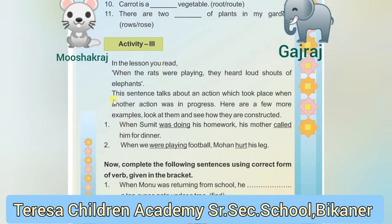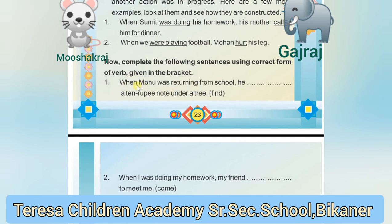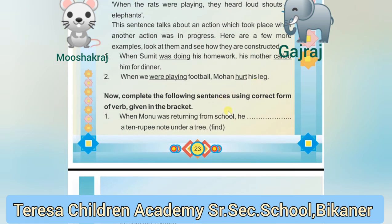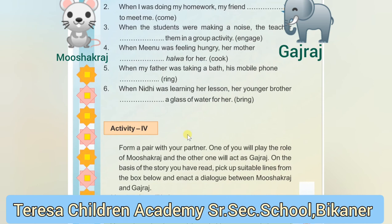Activity Three: In the lesson, when the rats were playing, they heard the loud shouts of elephants. This sentence talks about an action which took place when another action was in progress. For example: when Sumit was doing his homework, his mother called him for dinner — two actions happening at the same time. Similarly, complete the sentences: When Monu was returning from school, he found a ten-rupee note under a tree. Complete Exercise Three in the same way.